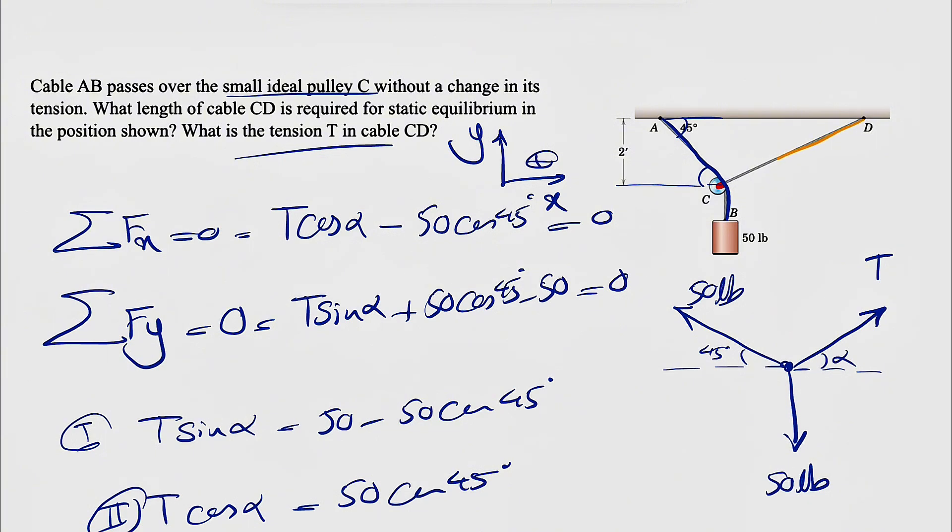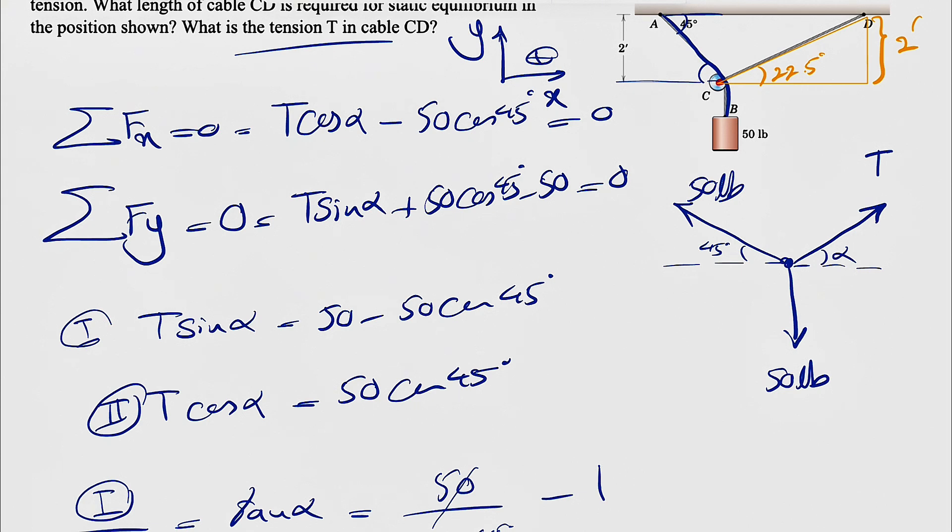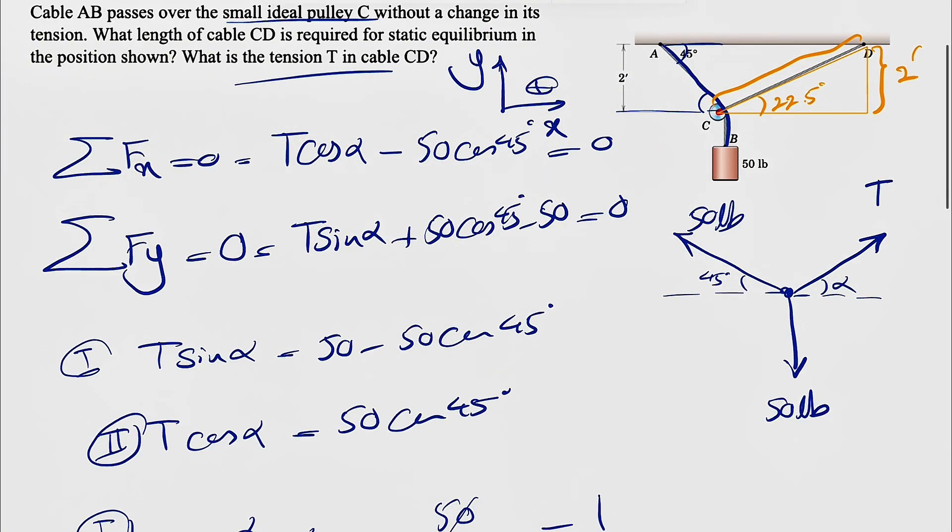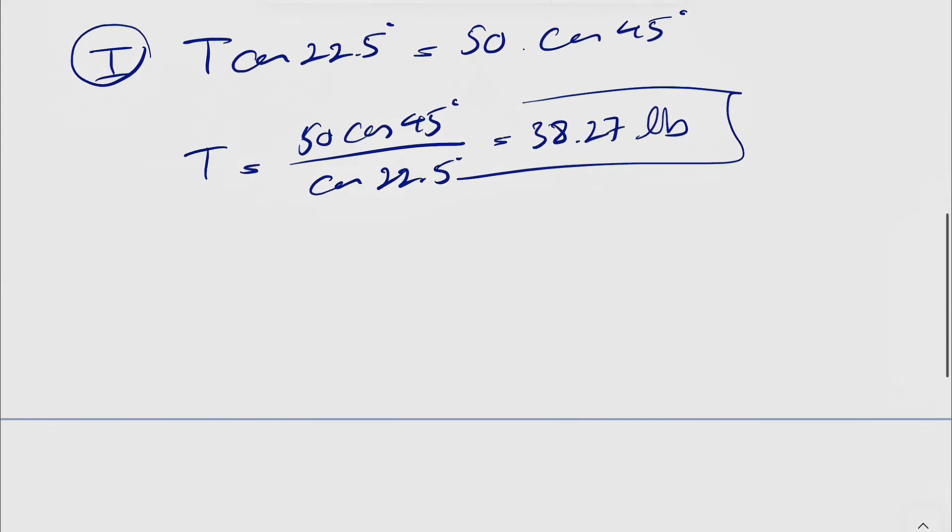And if we look at this right triangle that I'm showing in yellow, we found this angle is 22.5 degrees. We have this side two feet. So if we just do a simple, and since we're interested in the hypotenuse or length of CD, sine of 22.5 is going to give us two over CD. So we should be able to find CD.